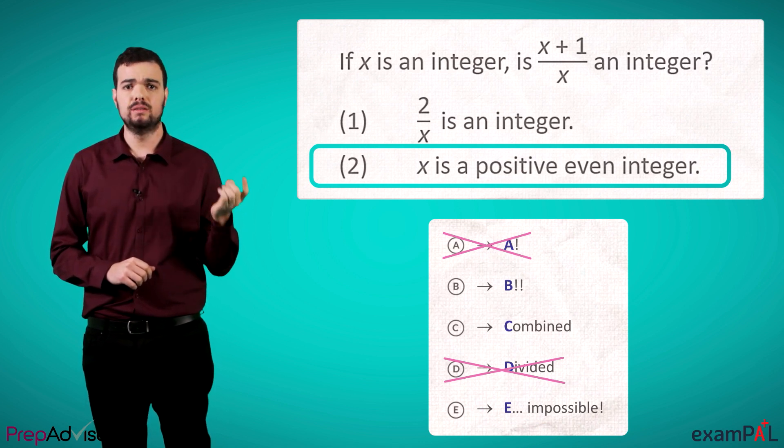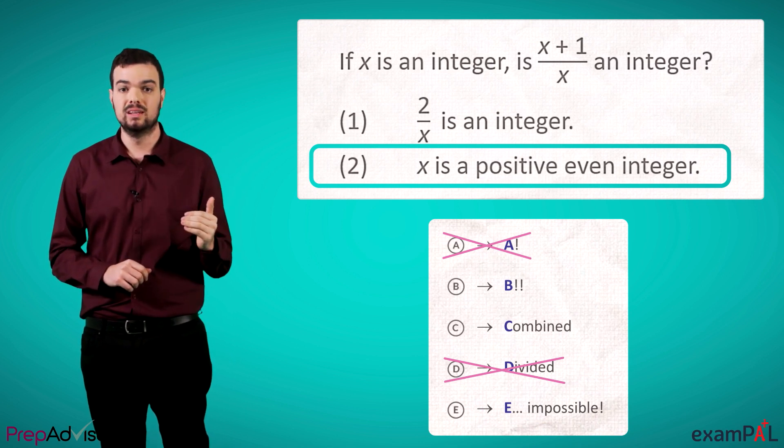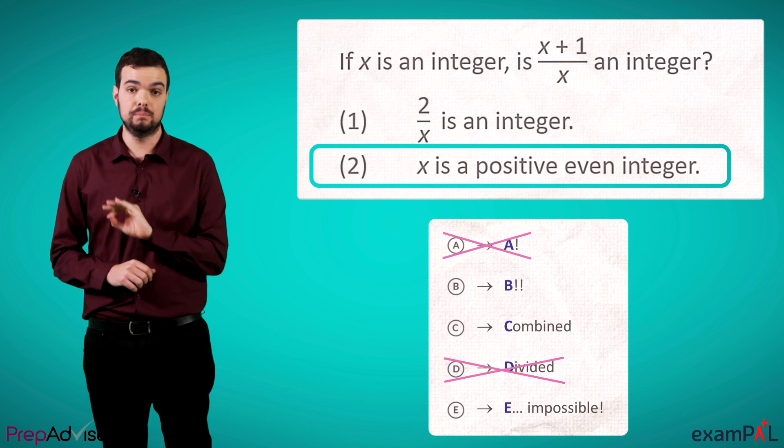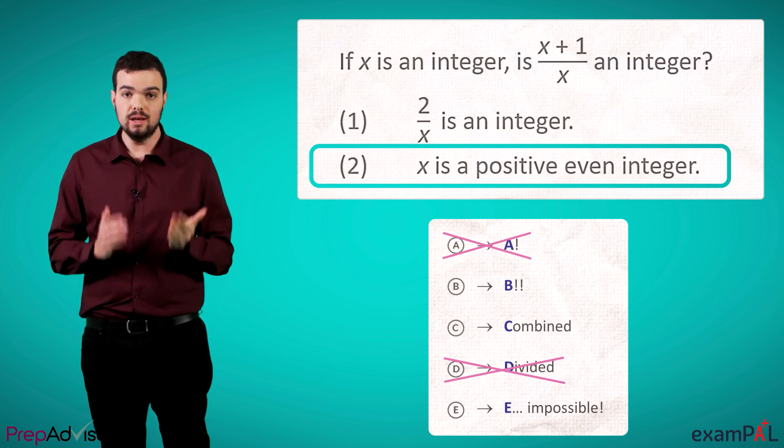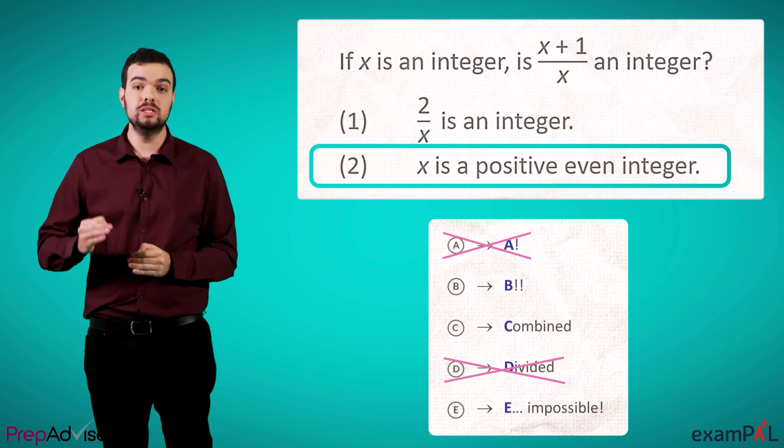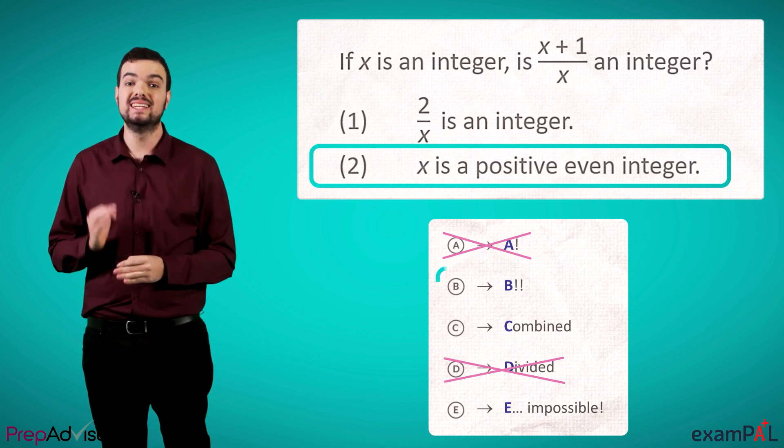So, (x+1)/x is odd divided by even. This cannot be an integer, which answers our question. So, 2 is sufficient to answer on its own. The answer is B.